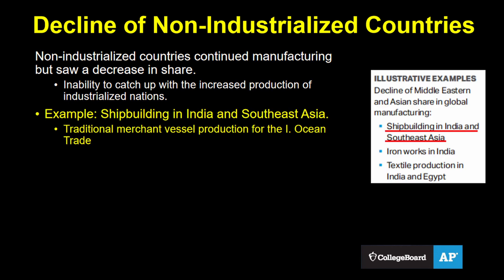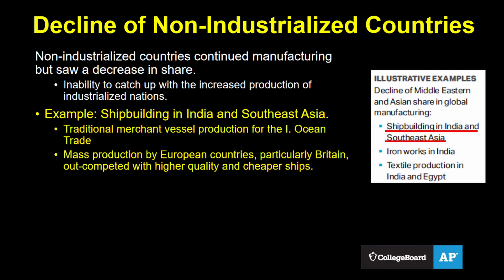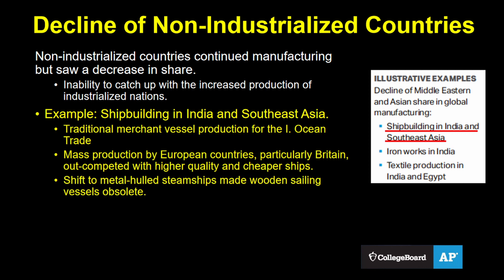Here's a College Board example of shipbuilding in India and Southeast Asia. Before the Industrial Revolution, both of these regions had a long tradition of producing ships that were used as merchant vessels in the Indian Ocean trade network. But with mass production, the steam engine, and the factory system, European countries — especially the British — were able to out-compete these Asian producers and made ships that were higher quality and cheaper. Also, as metal-hulled steamships became more prevalent, wooden sailing vessels became increasingly obsolete.